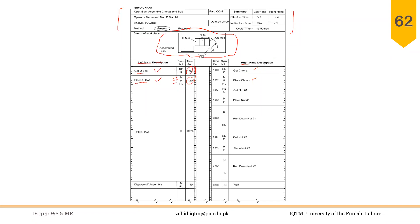Similarly for the right hand, 'get clamp' has two therbligs: reach and grasp. 'Place clamp' involves move, position, and release load. 'Get nut 1' involves reach and grasp, and so on. There is also unavoidable delay shown. From this example we can see that the left hand is holding the u-bolt for a lot of time — a hand should not act as a fixture, which is one of the principles of motion economy.